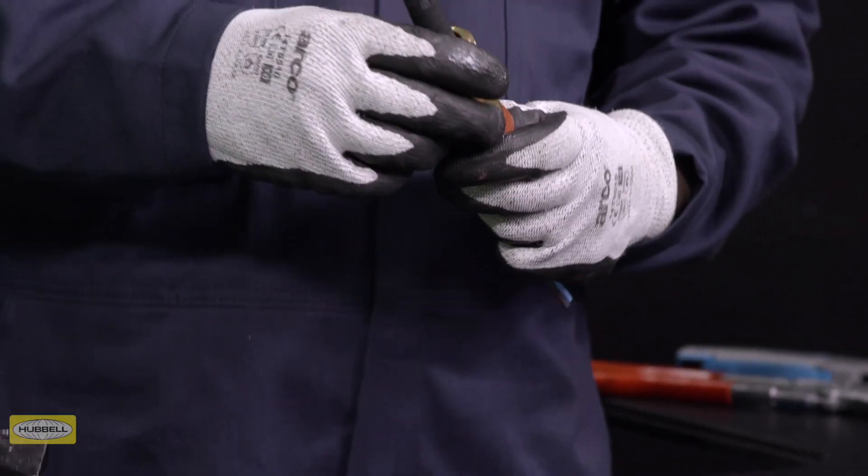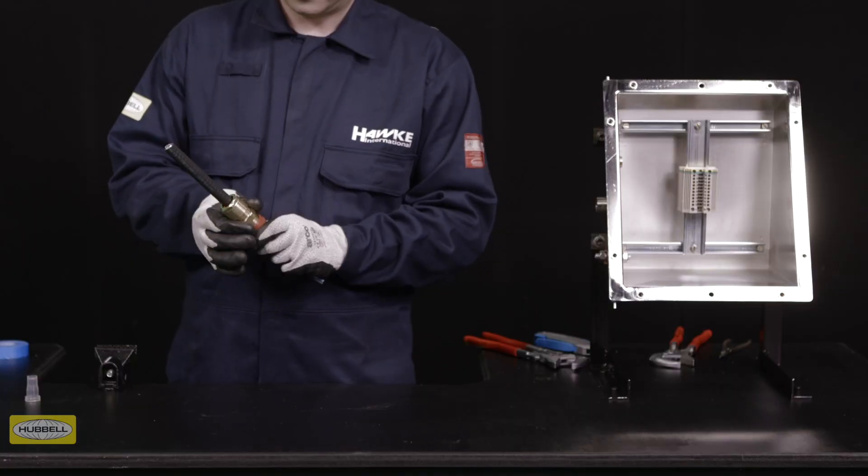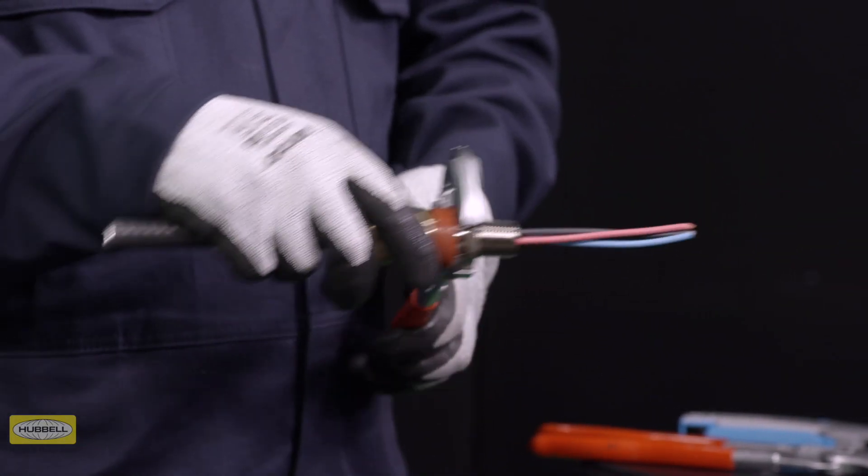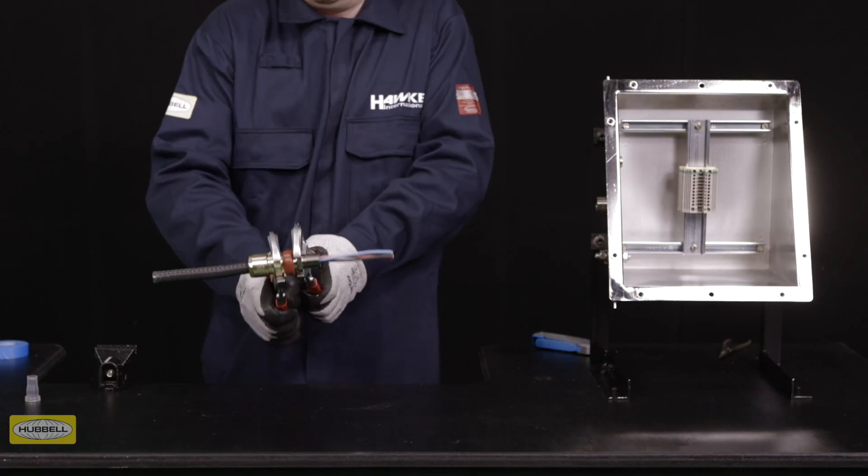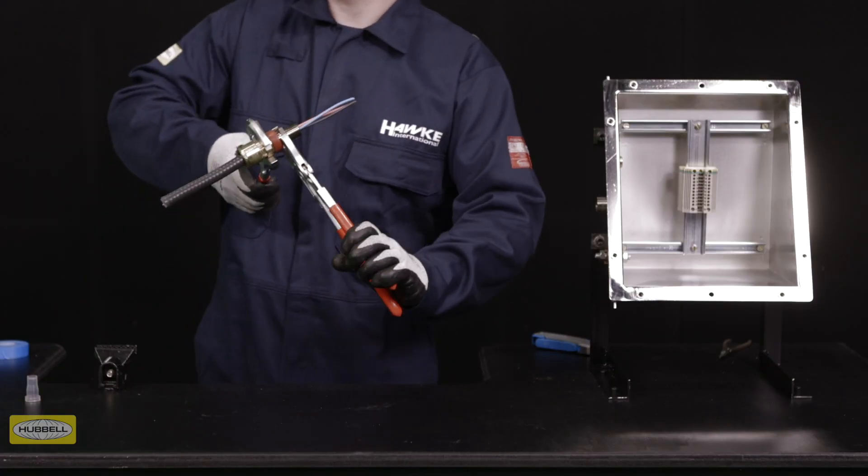Ensuring that the Diablo stays in place, tighten the middle nut onto the entry with a wrench until the Diablo grips the metal clad sheath. Tighten the middle nut a further half turn with a wrench.